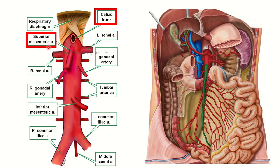In the anterior part we can see the celiac trunk, superior mesenteric artery, and inferior mesenteric artery — these are the anterior branches. The superior mesenteric artery lies below the celiac trunk. We should also remember that there are lateral branches and posterior branches of the abdominal aorta. So these four types of branches — anterior, posterior, lateral, and terminal — should be remembered for examination.